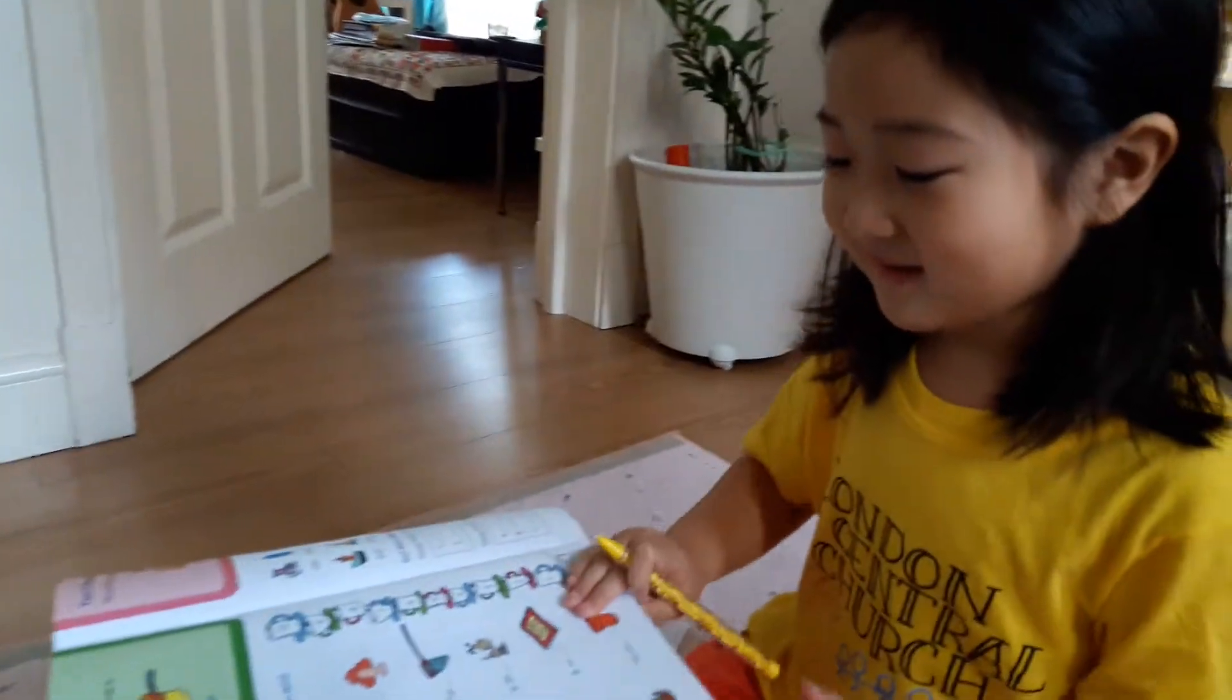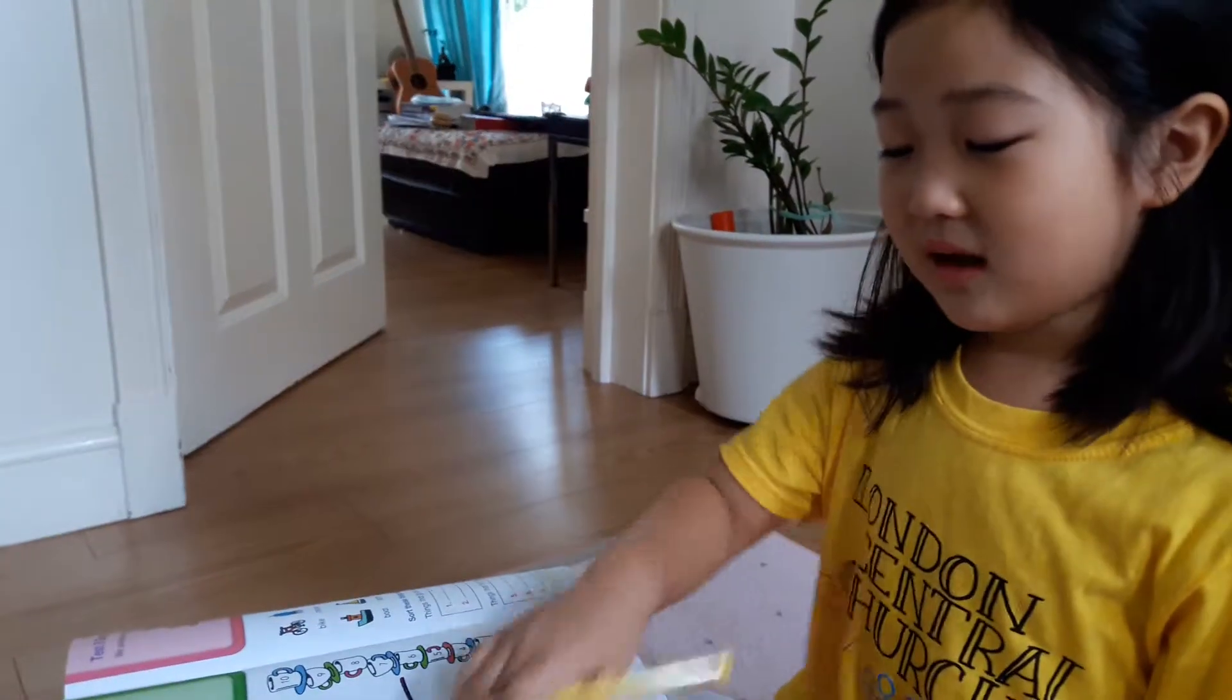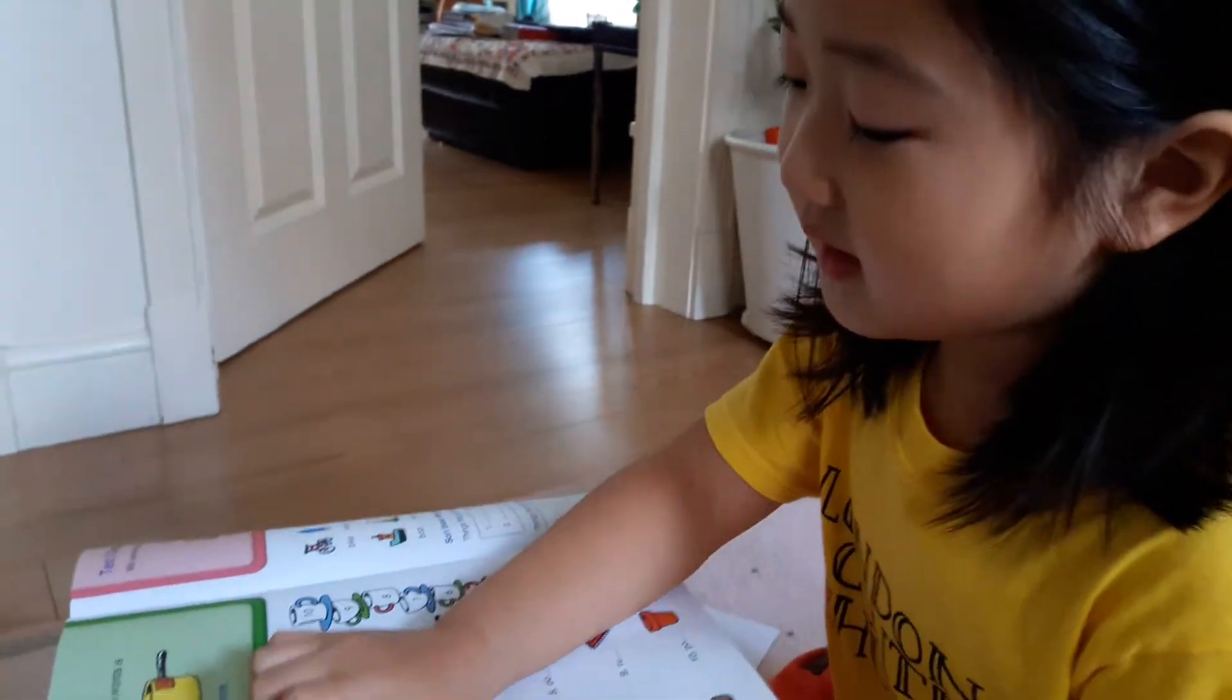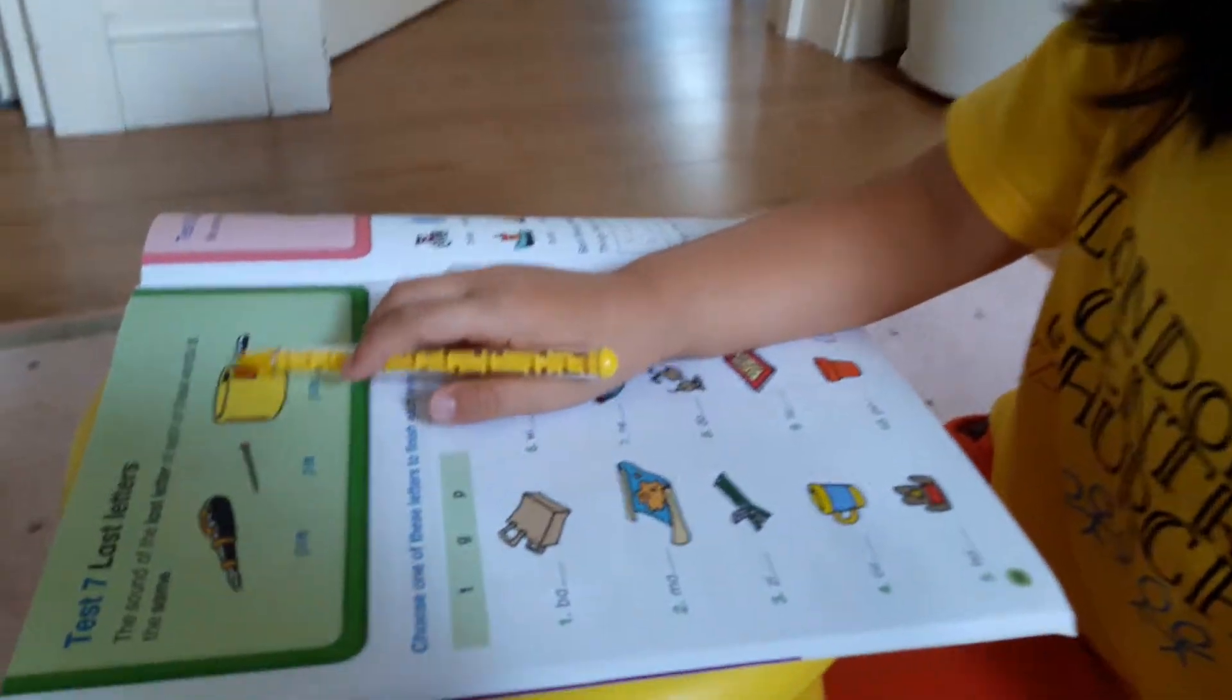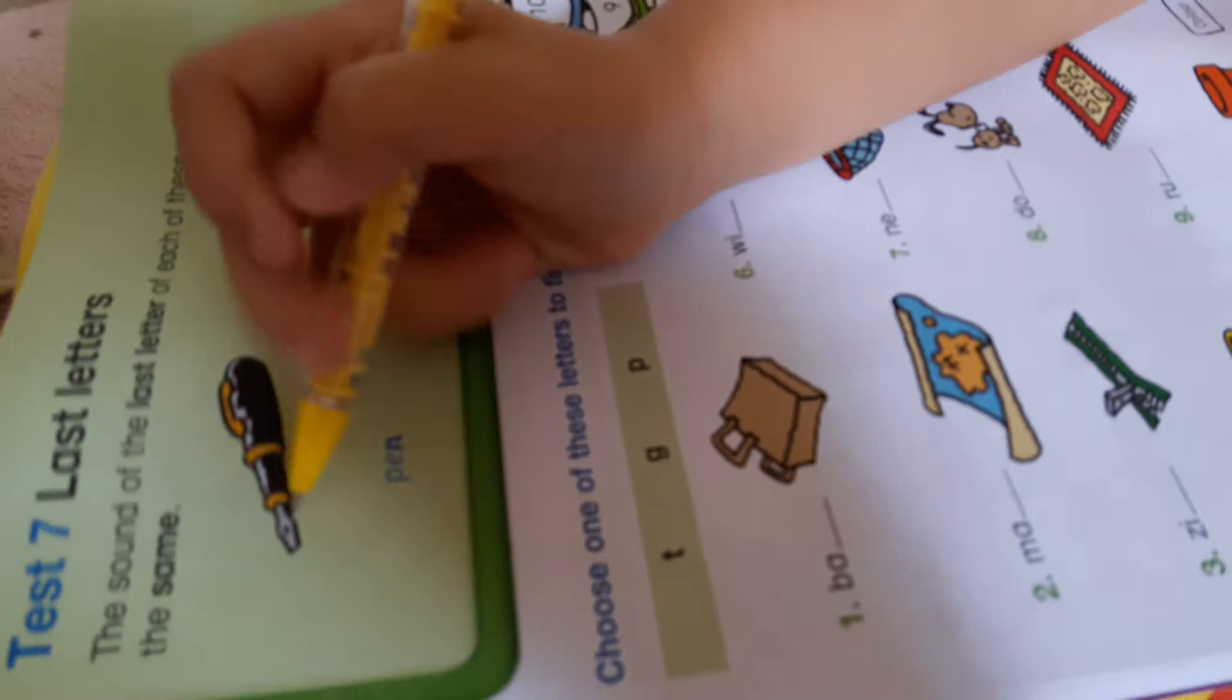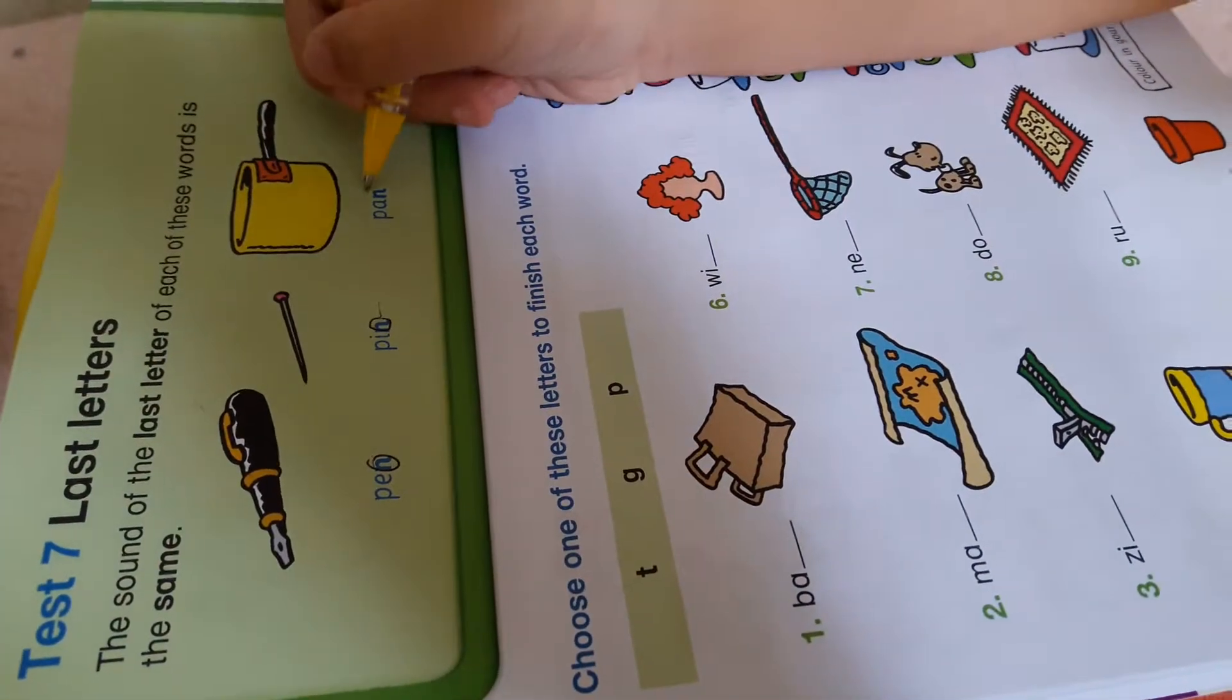Hello, today we are going to do a couple of tests. I'm on test 7, last letters. The sound of the last letter of each of these words is the same: pen, pin, pan. See, this is the N, and that's what they are meaning.